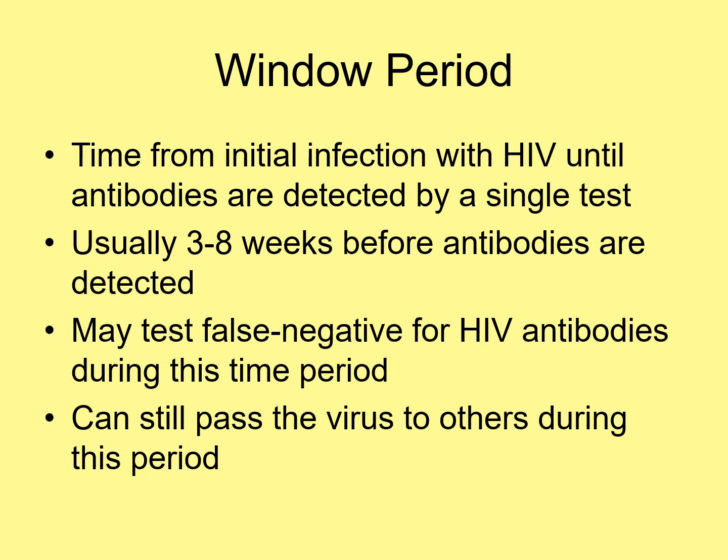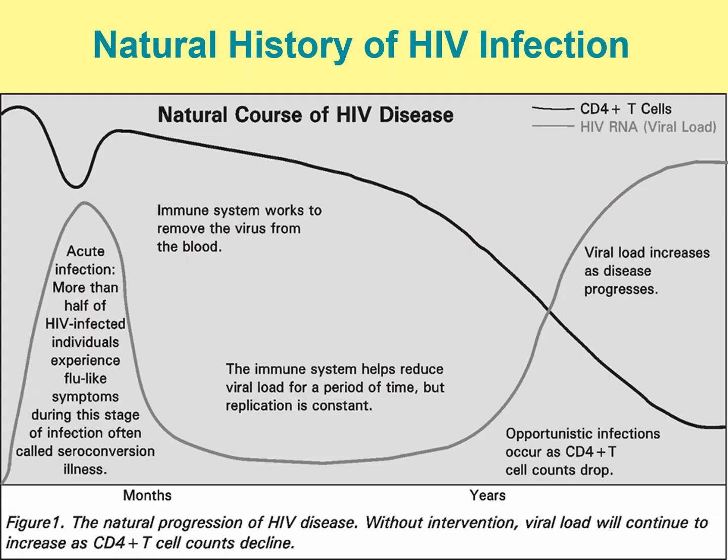You may test false negative for HIV antibodies during the window period. You can still pass the virus to others during this period even if you haven't undergone seroconversion. In the acute phase, more than half of HIV-infected individuals experience flu-like symptoms, often called seroconversion illness.